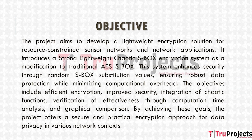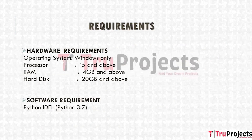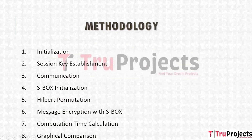The goals include efficient encryption, better security, chaotic function integration, efficiency verification by computation time analysis, and graphical comparison. Hardware requirements include Windows OS, an i5 processor or above, 4GB RAM or above, and 20GB hard disk or above. The software requirement is Python IDLE version 3.7.